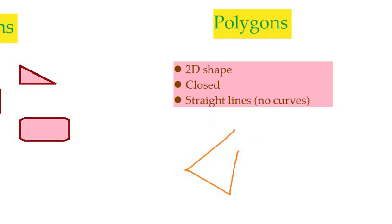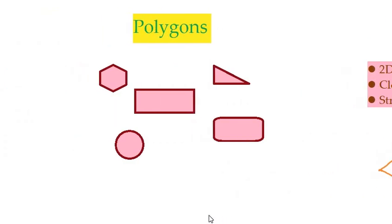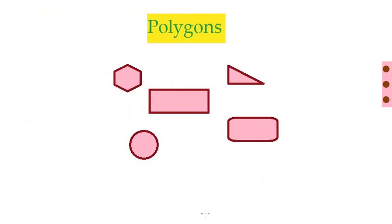So if I close this guy with a curve, that can't be a polygon either. So with that in mind, which of those fit the bill? Which are polygons? Two-dimensional. They're all 2D. Are they closed? Yes, they're all closed.